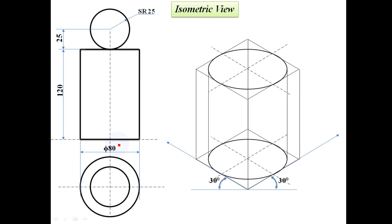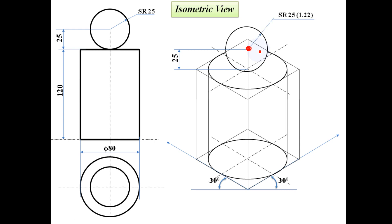Now we come to the sphere. This is the center point of the sphere. The distance between the center point and the top of the cylinder is the true length — that is 25mm. The radius of the circle for the isometric view is 1.22 into radius — that is 1.22 into 25 — which gives the enlarged radius. This is the sphere circle drawn at the center point.